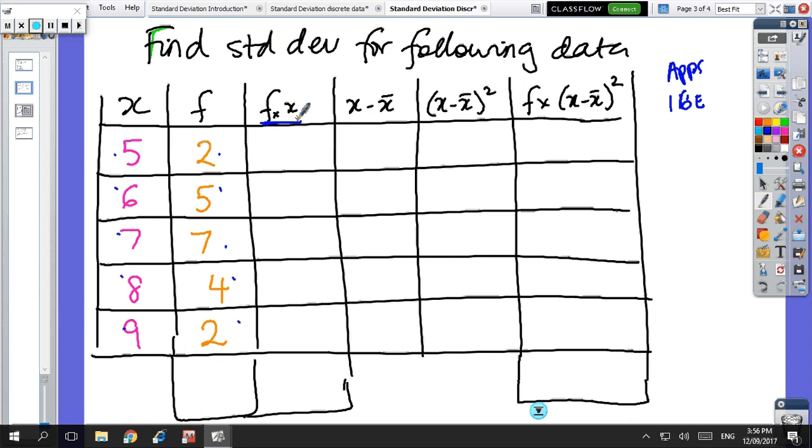So these are the columns you have to have. You need an fx column, which is going to help us find the mean or the average, and then we have to add the x minus x bar column, then we have to square column, and then we have to do a frequency times that number. So let's just go through it right now. So 5 times 2 is 10, 30, 49, 32, 18. So we've got 5, 7, 14, 18. We've got 20 scores.